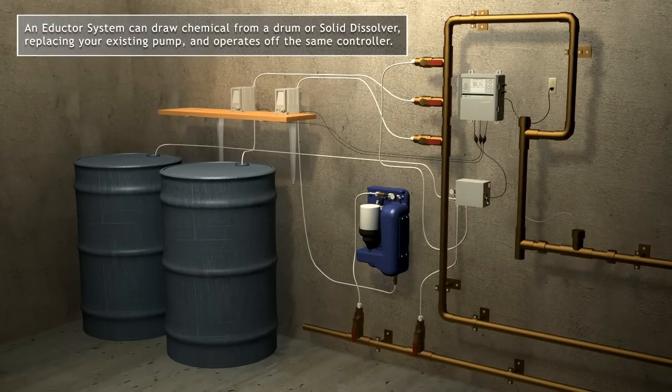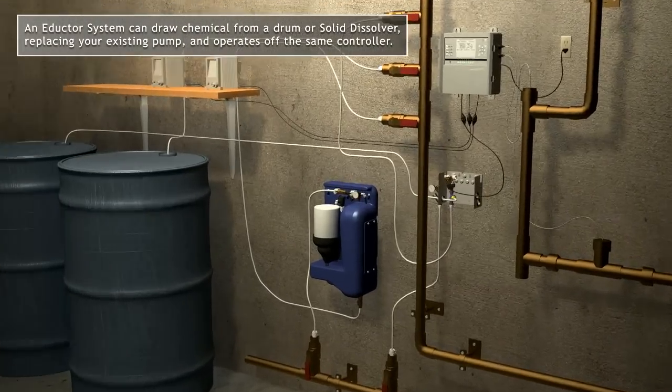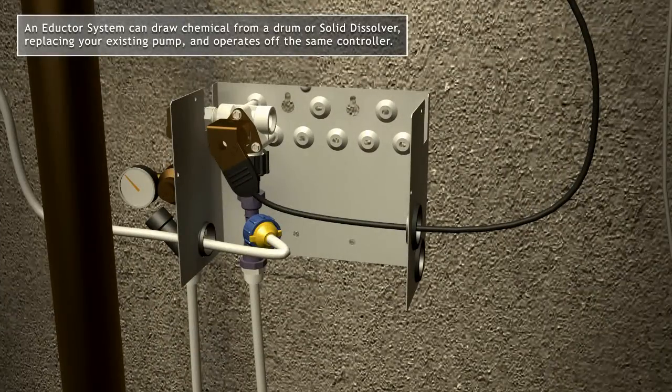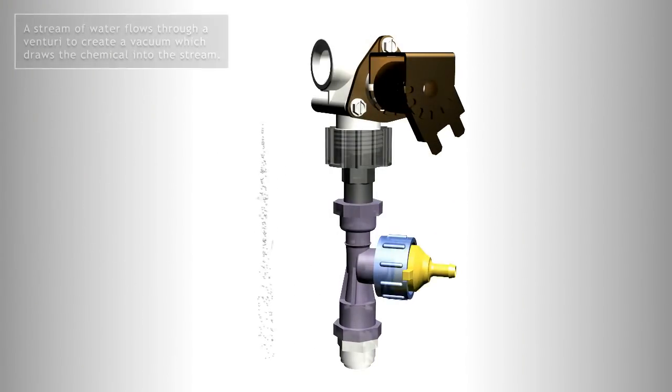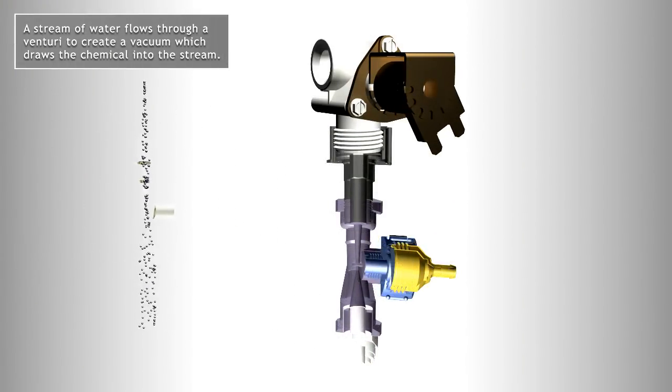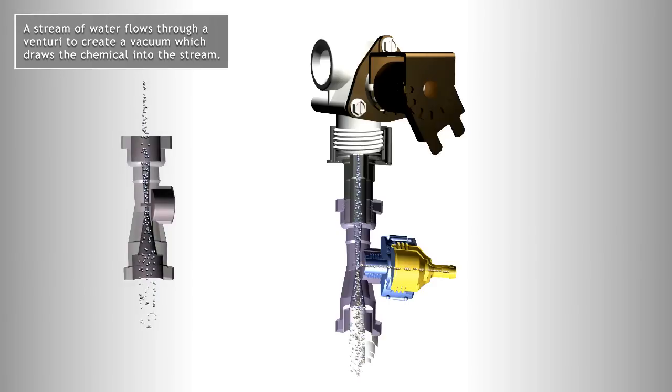Now what if you could eliminate the hassle of using diaphragm pumps to deliver the chemical? With virtually no maintenance, automatic priming, and a delivery rate up to 450 gallons per day, the HydroDose eductor system is the solution.